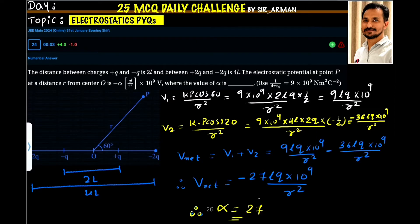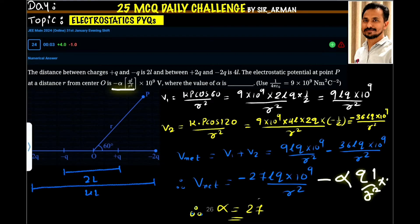The distance between +Q and -Q is 2L, and between +2Q and -4Q is 4L. The electrostatic potential at point P at a distance R from O is minus alpha times QL divided by R squared, times 10 raised to 9, where we have to find the value of alpha.